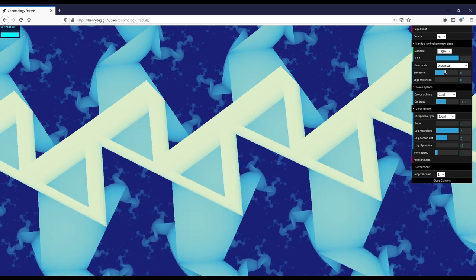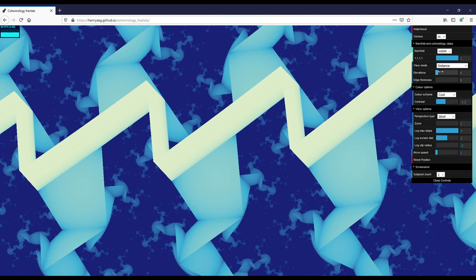And just as we did for the three-torus, when you look through the surface in one direction, it gets darker in the cohomology view. And if you look through in the other direction, it gets lighter.